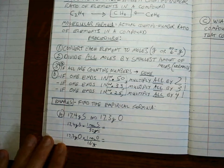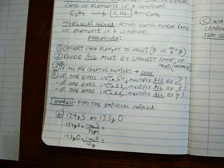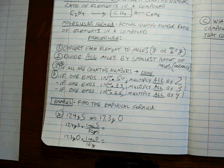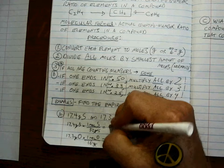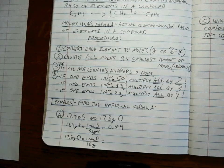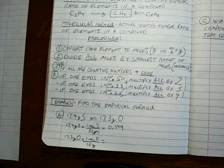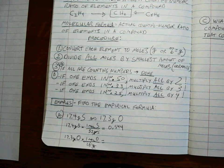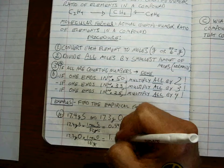All right, that gives us values. 17.4 divided by 32 is 0.544. 17.3 divided by 16 is 1.08.